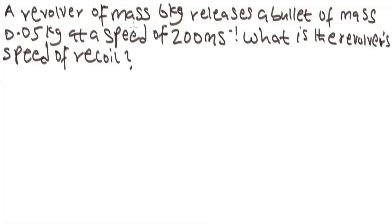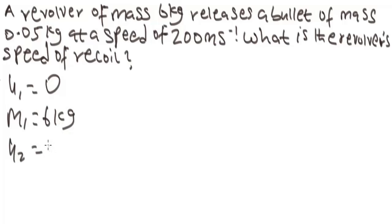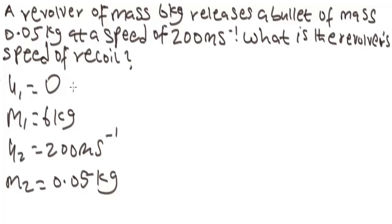Now let's solve another problem. It says: a revolver of mass 6 kg releases a bullet of mass 0.05 kg at a speed of 200 meters per second. What is the revolver's speed of recoil? So let's get the parameters. Our M1 is 6 kg, U1 is 0. Our M2 is 0.05 kg, U2 is 200 meters per second. U1 is 0 because before the bullet is released, everything starts from rest.